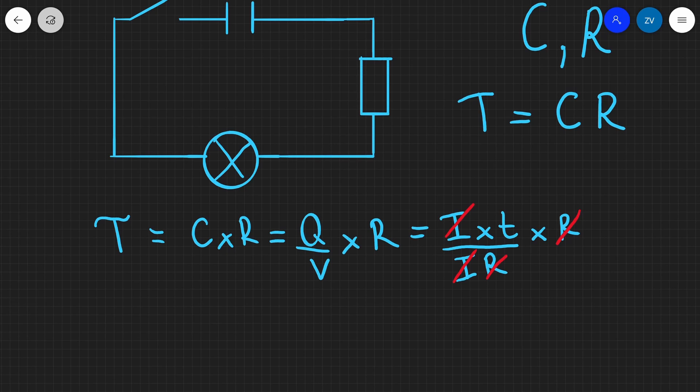And let's cancel some quantities out so the I's can go and so do the resistances. And we can see that essentially this quantity, C times R, actually has the units of time seconds. And it is a quantity of time.